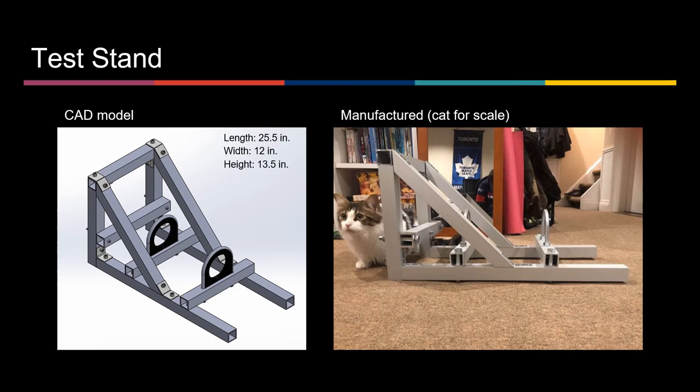The test stand was designed so that the rocket could be held in place during firing, so that we could obtain a thrust reading. The structure of the stand is made from aluminum tube, which was easy to cut and was light. The dimensions of the test stand are 25.5 x 12 x 13.5 inches. Attached to the test stand are U-bolts which allow the rocket to travel horizontally, and at the front of the test stand is an S-shaped load cell, which uses piezo resistors and a wheatstone bridge circuit to measure the thrust from the rocket.